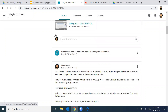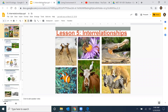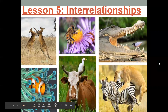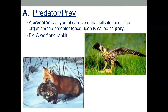We're going to start on page 114 — interrelationships. This is stuff you guys already know, we just never took notes on it. So predator-prey relationship: a predator is a type of carnivore — it eats meat and kills its food. The organism the predator feeds upon is called its prey. Examples include wolf and rabbit, lion and zebra, bear and fish.